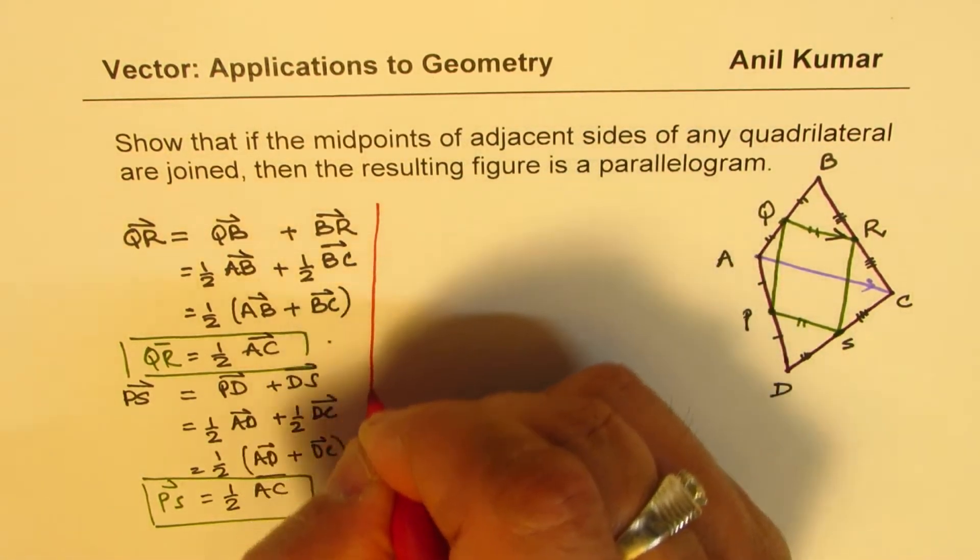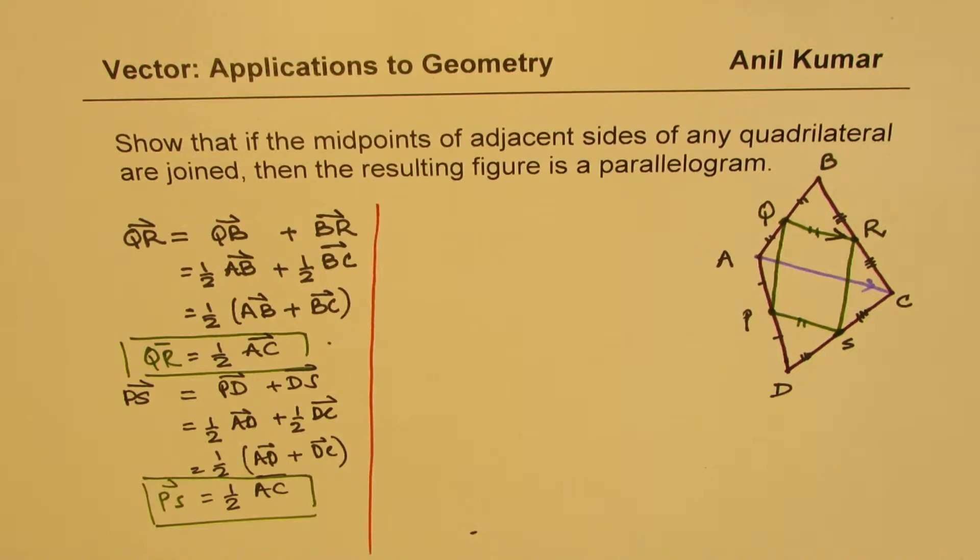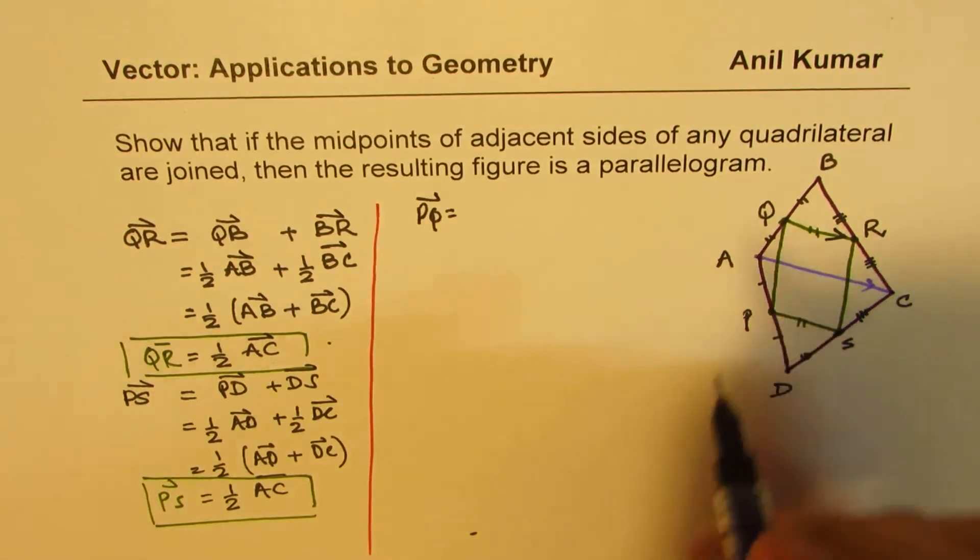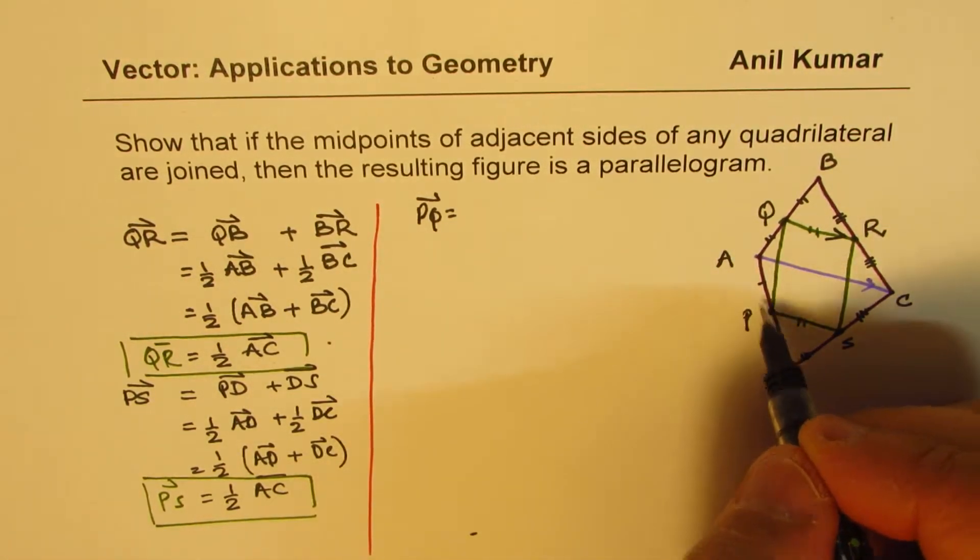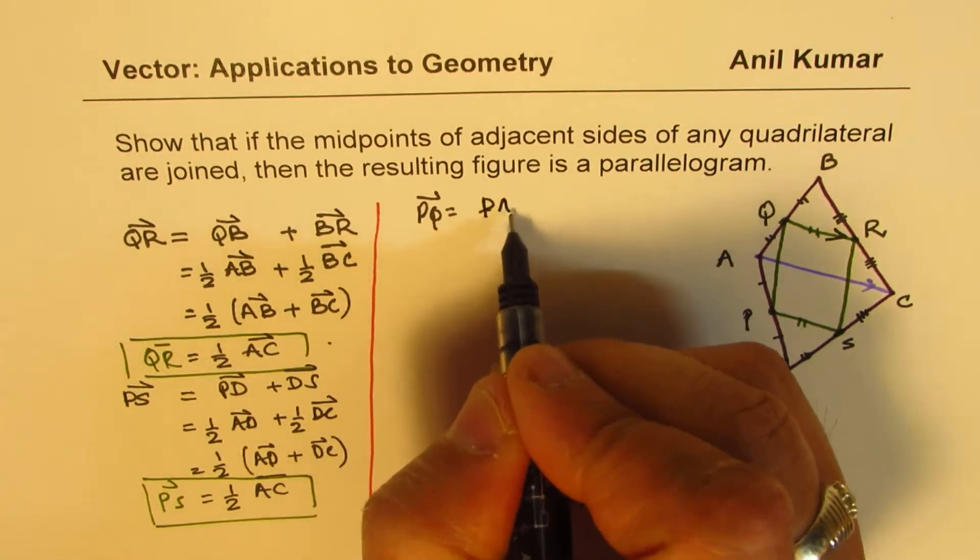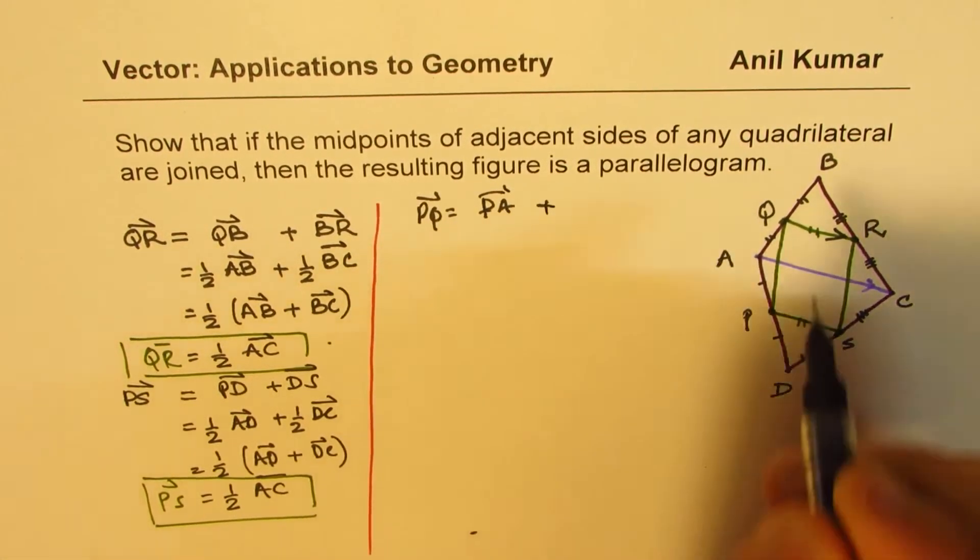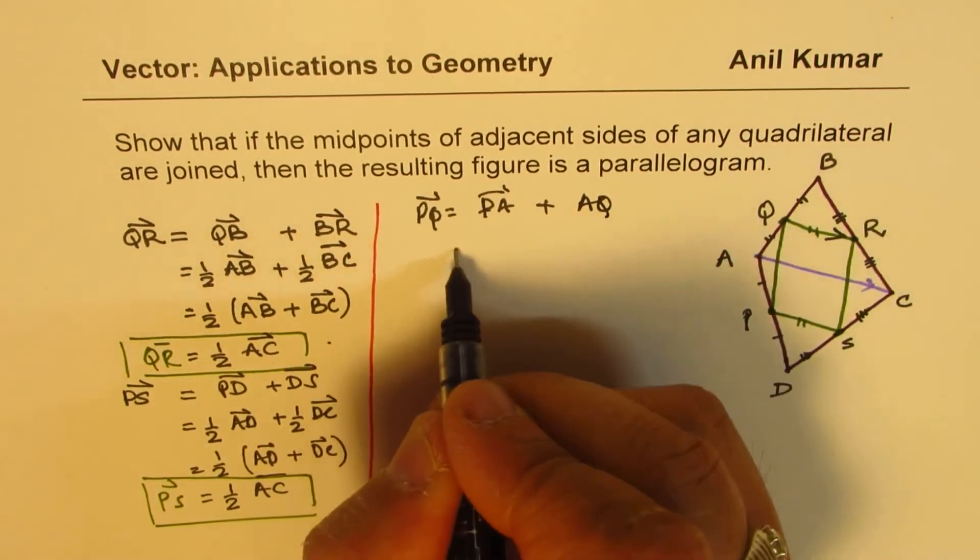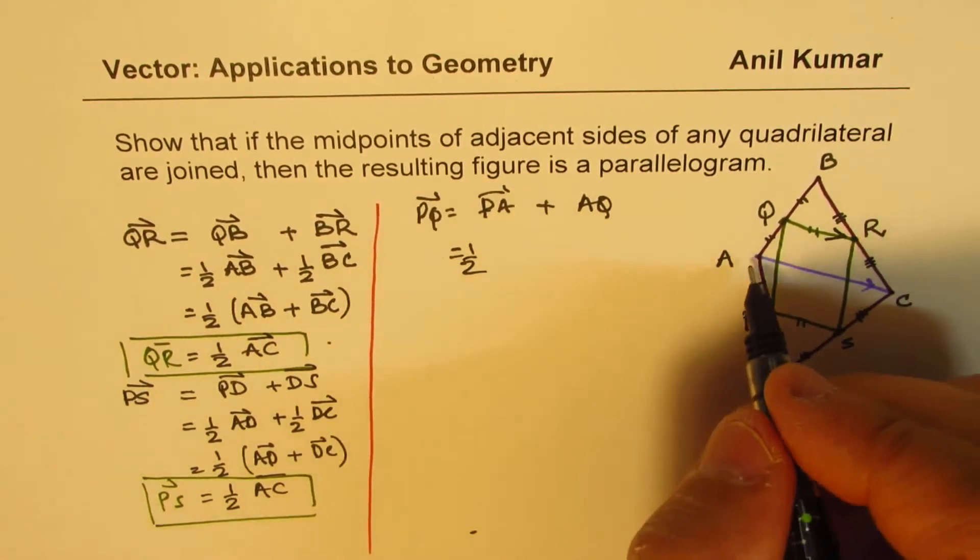I'd like you to use the same strategy and then figure out what P, Q is. So you can say the same thing. So P, Q will be equal to P to A plus A to Q.